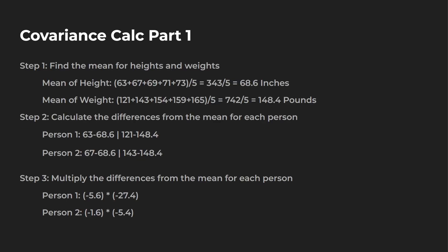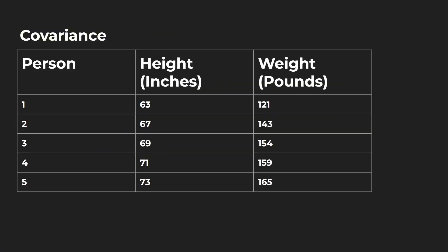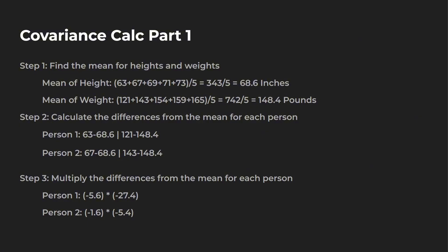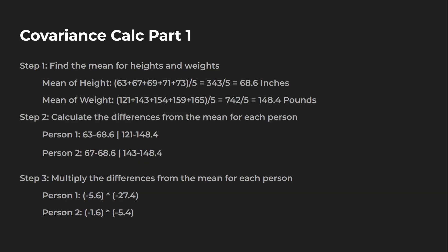I wanted to take that example of height and weight and apply this to a problem so you can more visualize what is going on. We find different people in this dataset — the heights range from 63 to 73, with weight in pounds going from 121 all the way to 165. Now the first thing we're going to do is find the mean of your height and weight, those two columns we're going to be taking a look at the covariance on. Height mean is 68.6 and the mean of weight is 148.4.